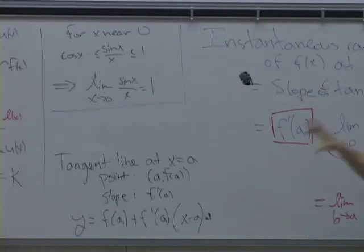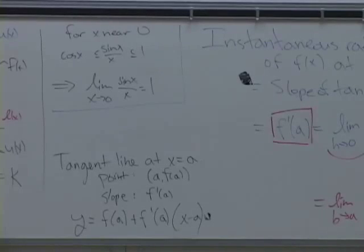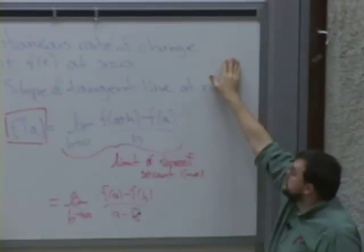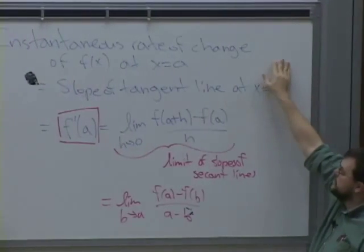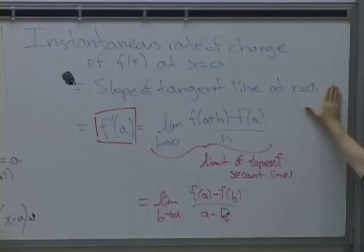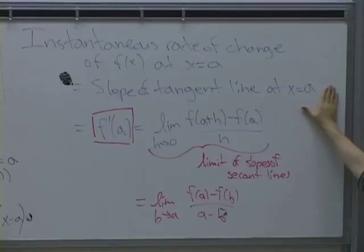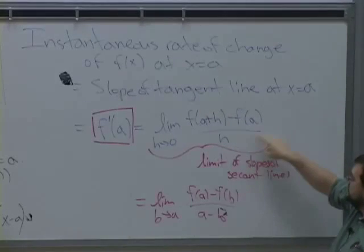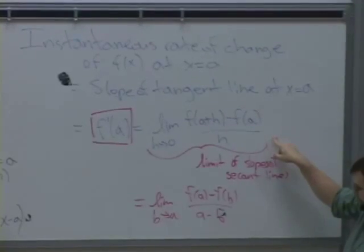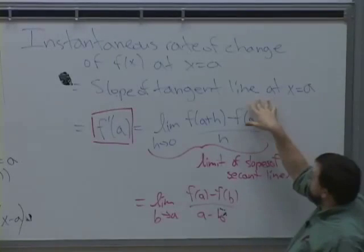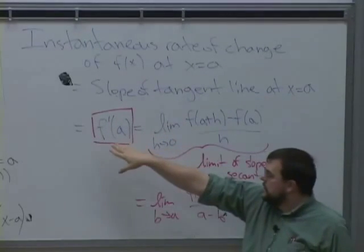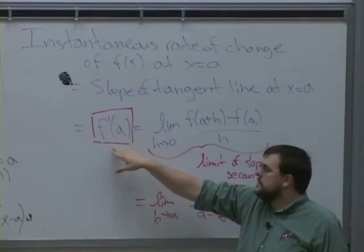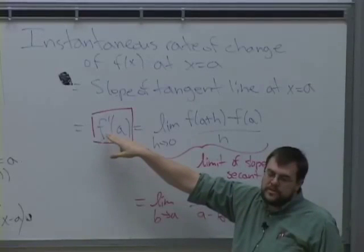So that was limits. Now we want to jump into chapter 3, which talks about derivatives. We started the class on the first day talking about instantaneous rate of change, and we said the instantaneous rate of change is the slope of the tangent line. It's hard to find the slope of the tangent line, but it's easy to find slopes of secant lines. The slope of the tangent line at x = a is denoted f'(a) — the derivative of f at a.